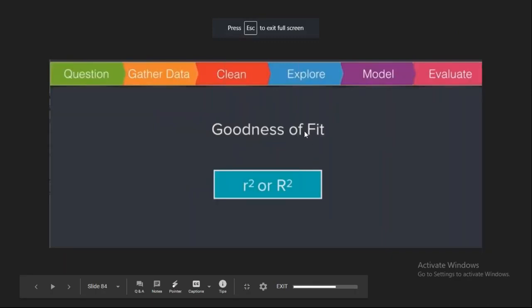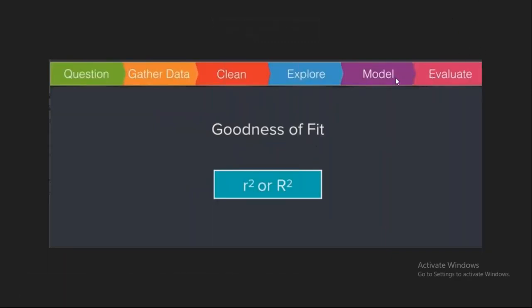We are getting an R-squared score close to 54%, meaning our model is predicting close to 50% of values accurately. That's actually good accuracy because we only have one feature, and based on that one feature we are predicting the output.